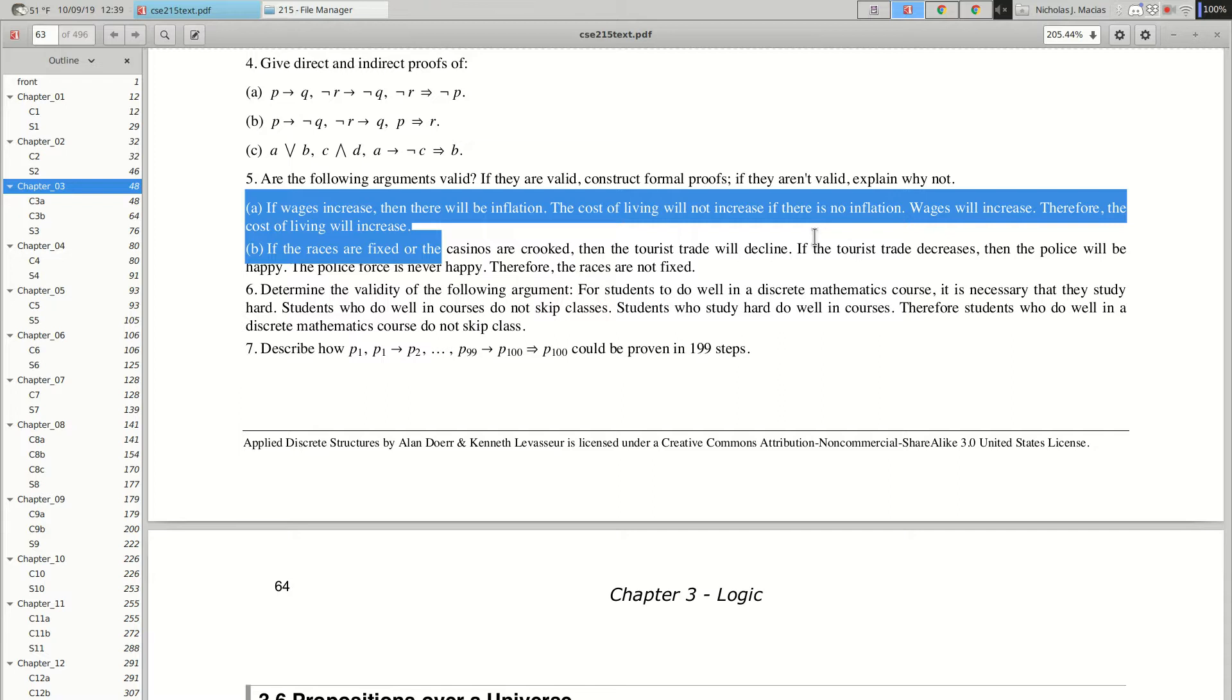The cost of living will not increase if there is no inflation. So, what are some propositions in there? The cost of living will not increase, and there is no inflation, right? Now I'm going to suggest, and it doesn't matter, we get the same result in the end, but I'm going to suggest since we eventually have another phrase which says the cost of living will increase, let's make our proposition the affirmative. Cost of living will increase, and then this first statement will be not that proposition.